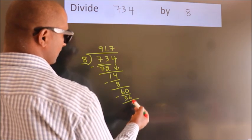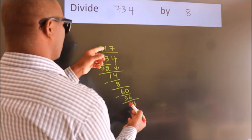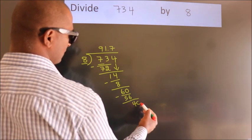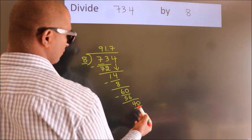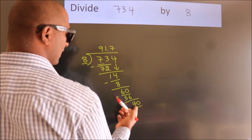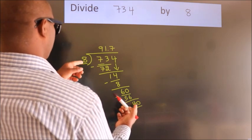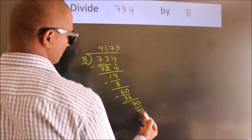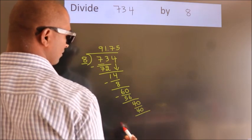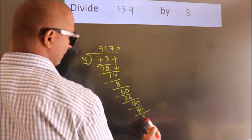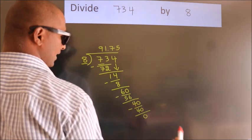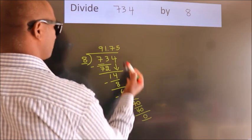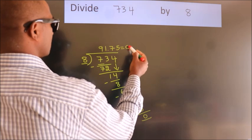After this, we already have the decimal. So directly take 0. So 40. When do we get 40? In 8 table. 8 fives, 40. Now we subtract, we get 0. Here we got remainder 0. So this is our quotient.